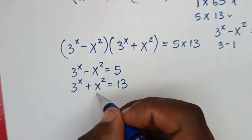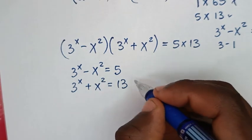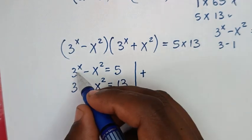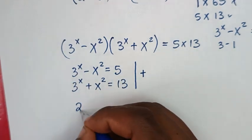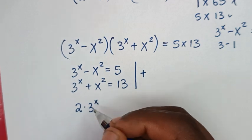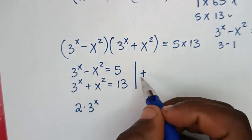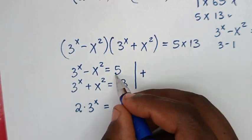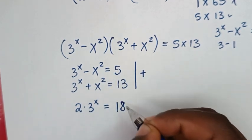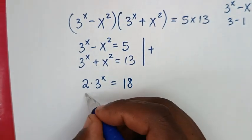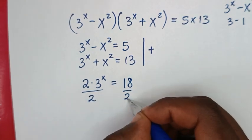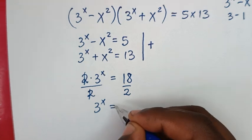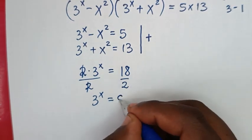To solve this simultaneous equation system, we use the elimination method. By adding these two equations, we get 3 power of x plus 3 power of x, which is 2 times 3 power of x. The x squared terms cancel (minus x squared plus x squared equals 0), and this equals 5 plus 13, which is 18. Then we divide both sides by 2, so 3 power of x is equal to 18 divided by 2, which is 9.